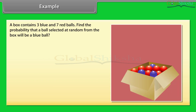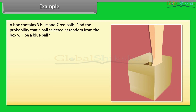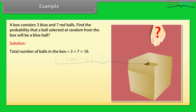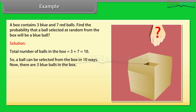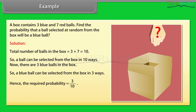A box contains 3 blue and 7 red balls. Find the probability that a ball selected at random from the box will be a blue ball. Solution: total number of balls in the box is equal to 3 plus 7, which equals 10. So a ball can be selected from the box in 10 ways. There are 3 blue balls in the box, so a blue ball can be selected in 3 ways. Hence, the required probability is equal to 3 by 10.